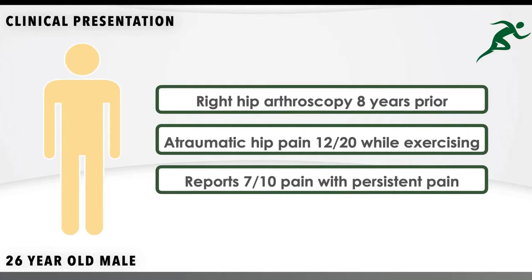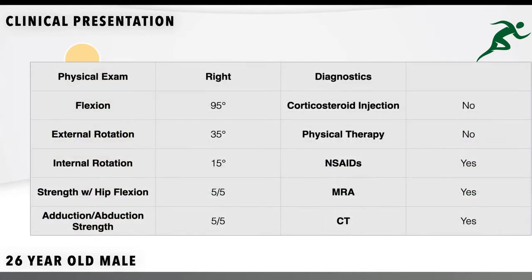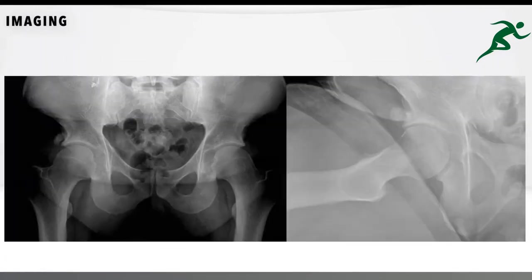His physical exam revealed 0 to 95 degree hip flexion, slightly restricted internal and external rotation with relatively normal abduction and adduction strength. The patient has not yet tried a new round of physical therapy or an intra-articular corticosteroid injection. The patient has tried anti-inflammatories with mild relief in pain.